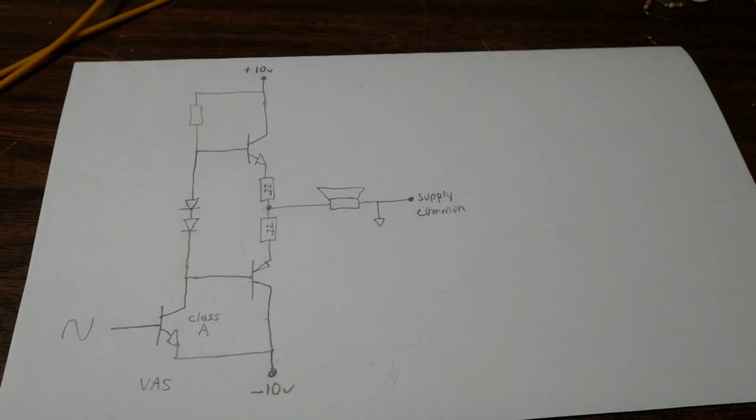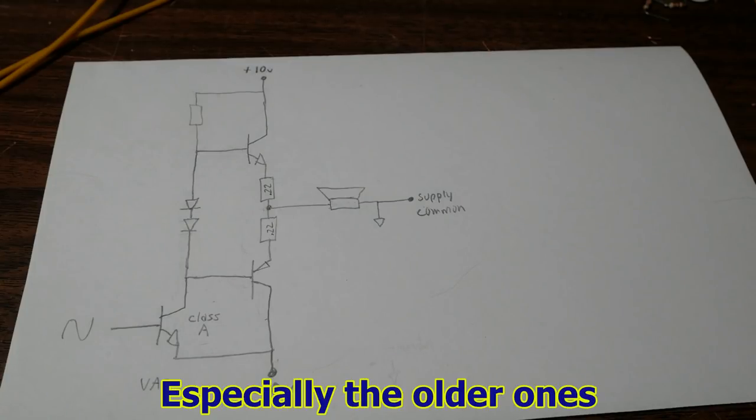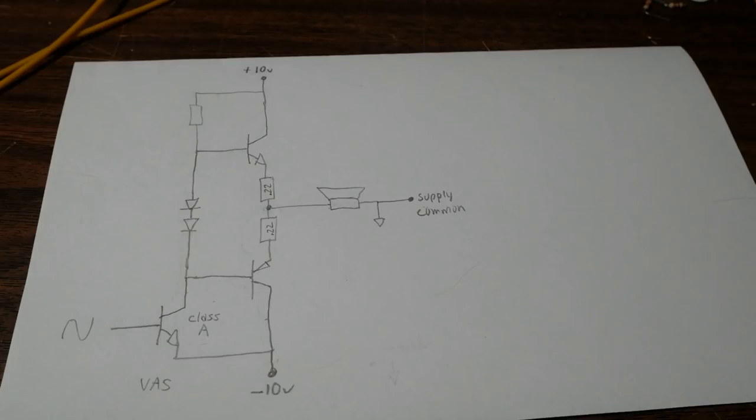If you ever worked on an amplifier, you might have seen this before, and if you've played around with integrated circuit audio amplifier chips, you might have seen on the datasheet there's a pin that's marked bootstrap, and the schematic shows that you connect a capacitor from the output to the bootstrap pin. The purpose of that is to allow for a greater output voltage swing which results in higher output power.